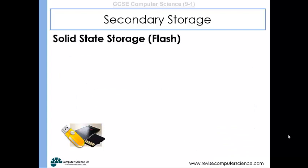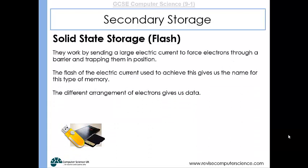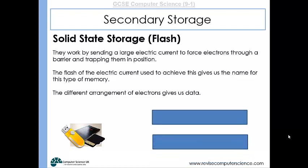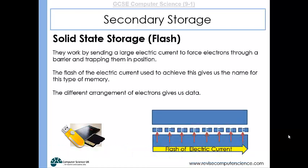Solid state storage — flash storage devices — work by having a large electrical current forcing electrons through a barrier and trapping them into position. The different arrangements of these electrons gives us our data.